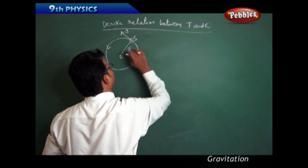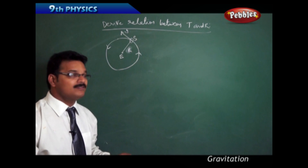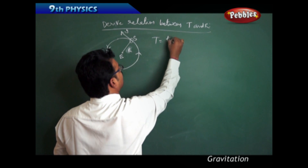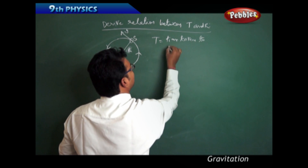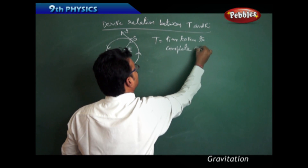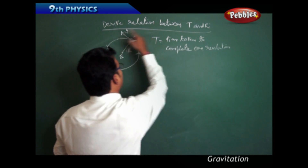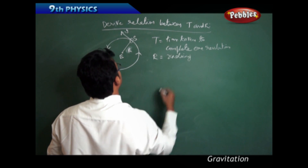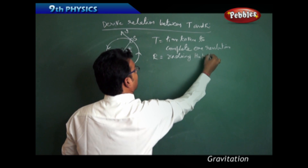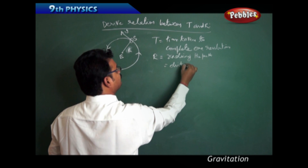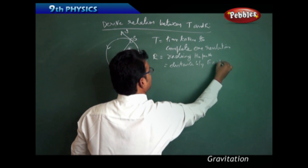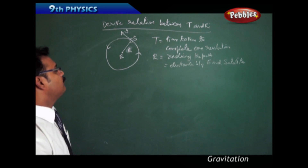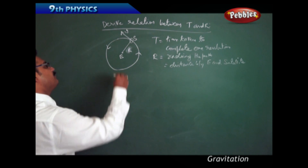I'll use capital R since I've taken capital notation here. Capital T is the time taken for the satellite to complete one revolution around the Earth. R equals the radius of the path — or I can say the distance between the Earth and the satellite.